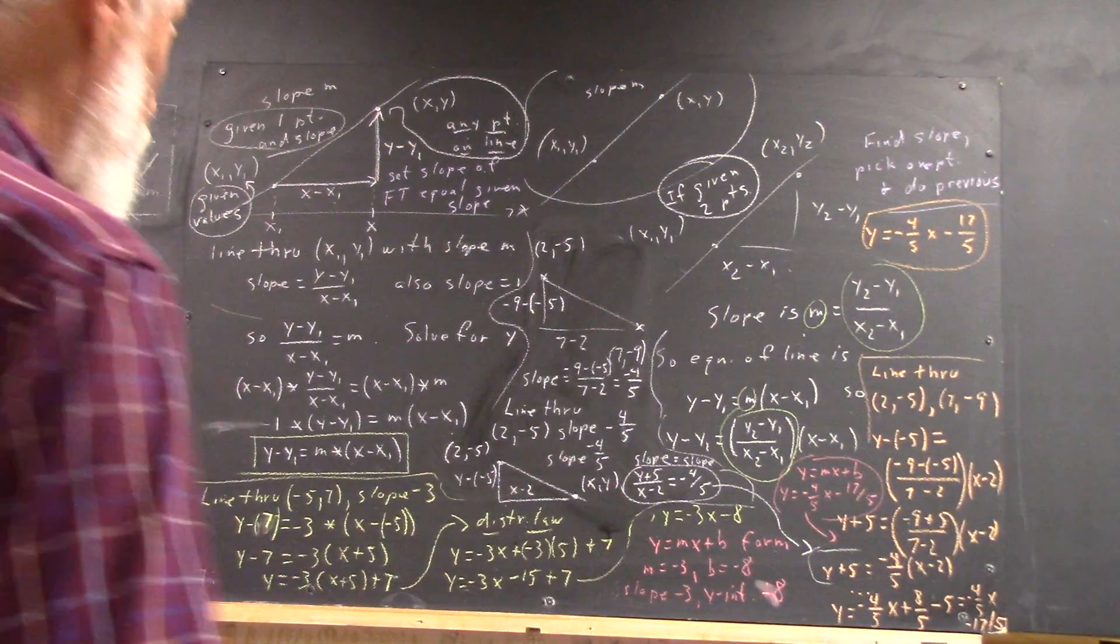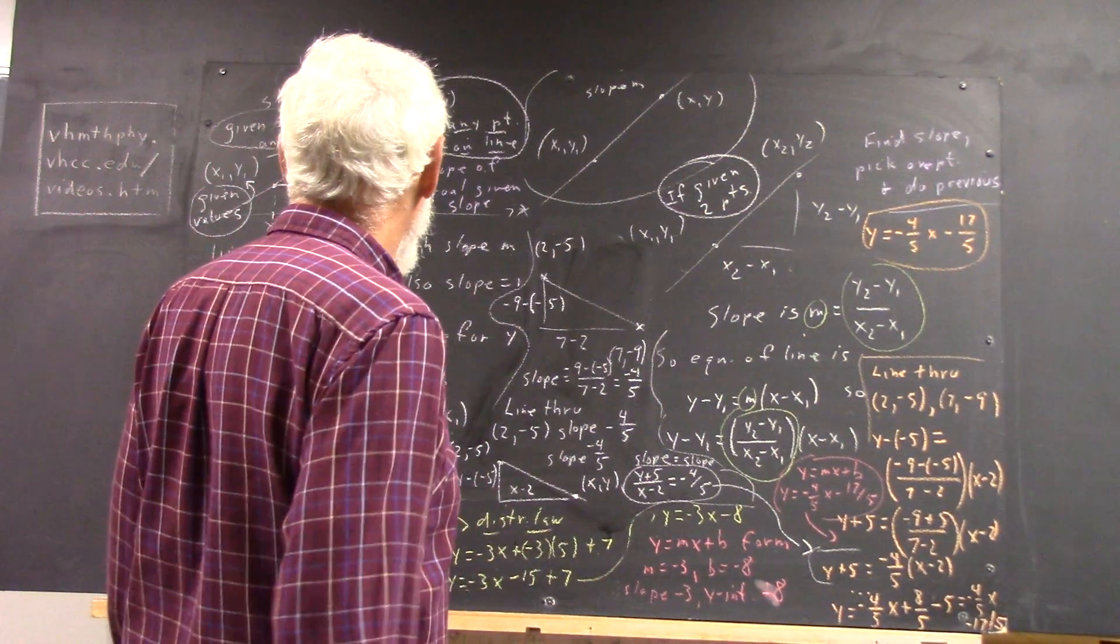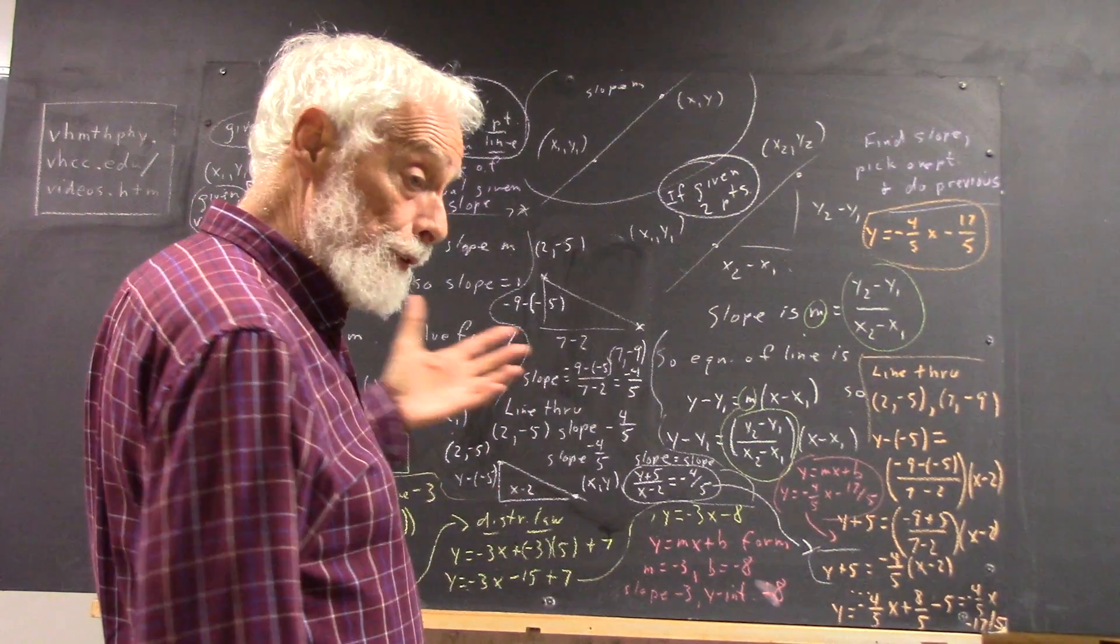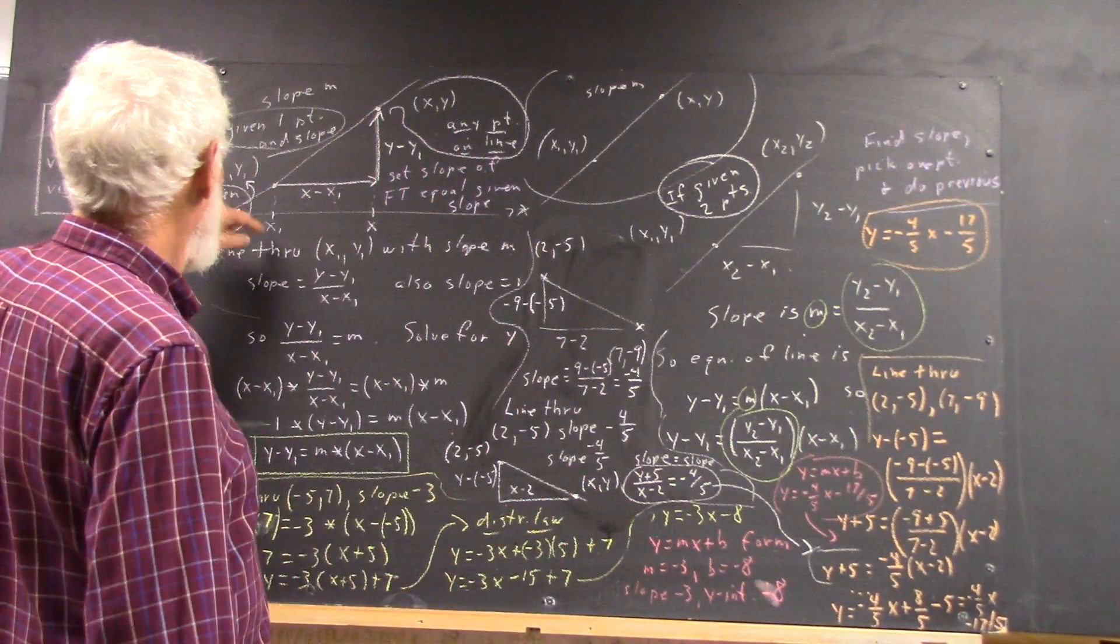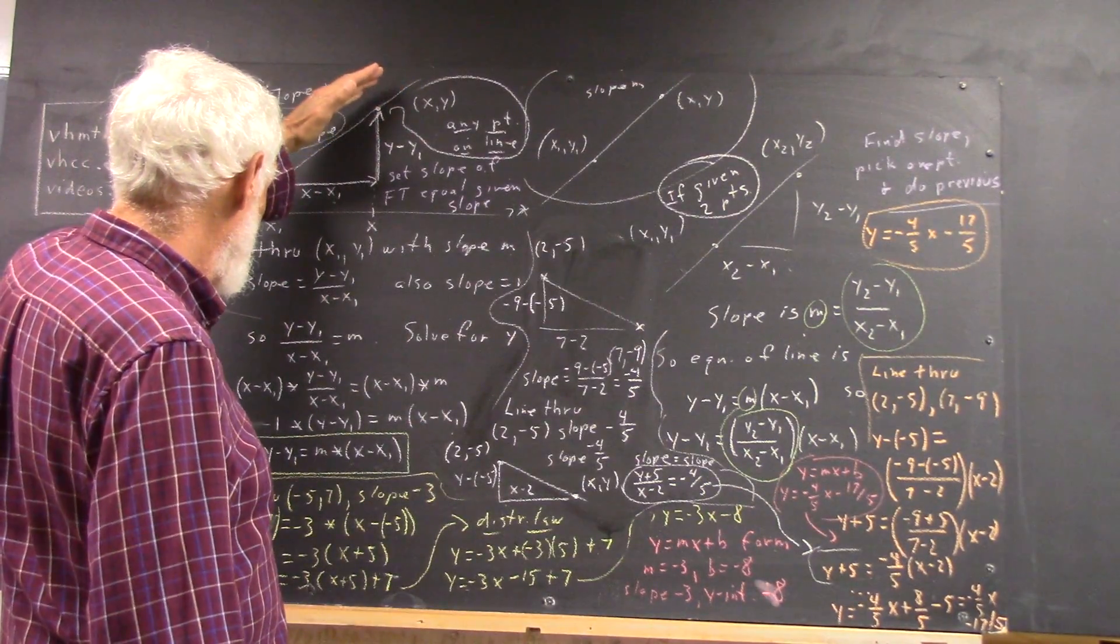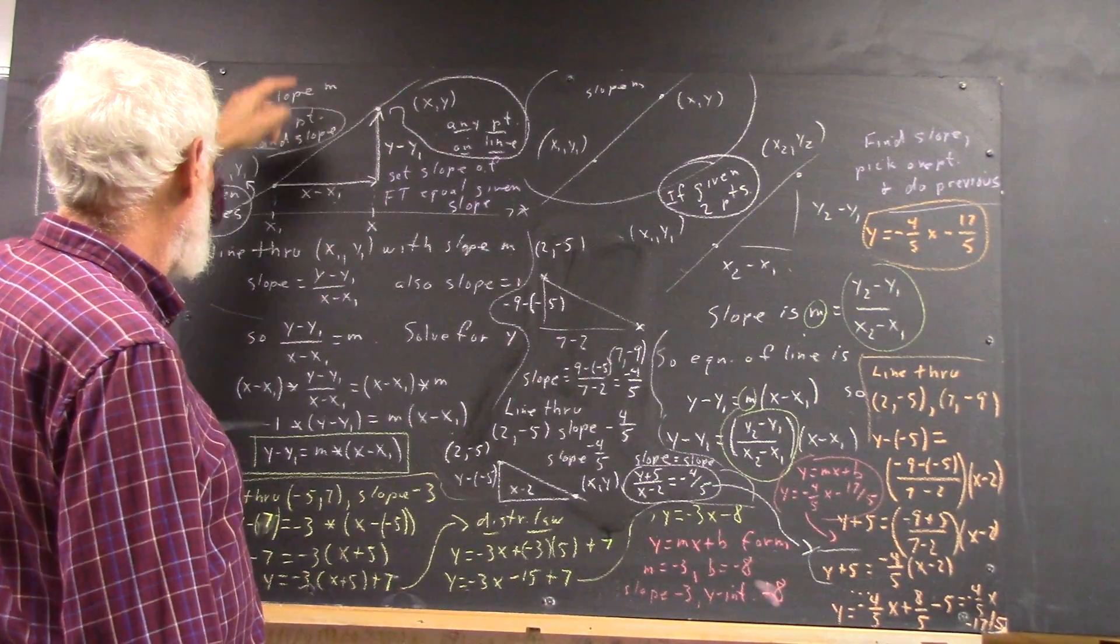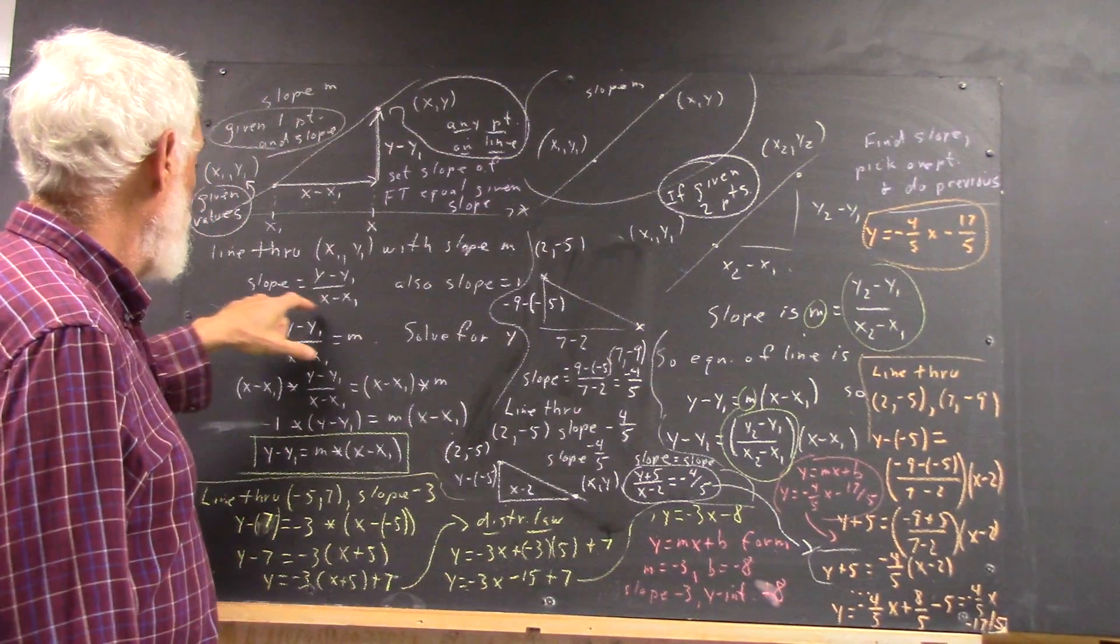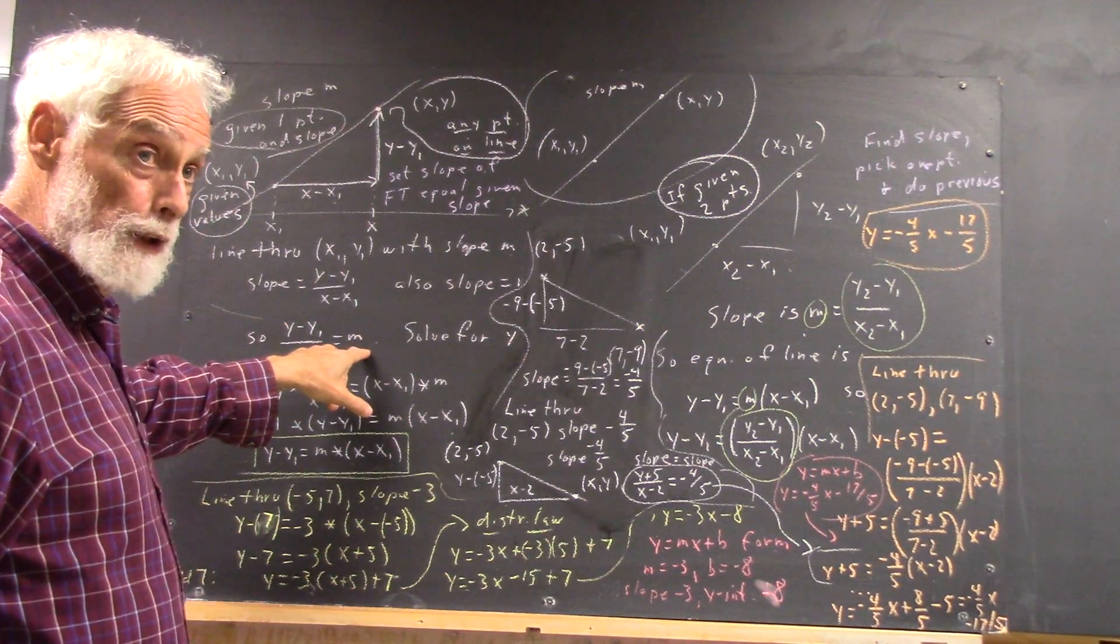Once more, just to beat a dead horse, okay? If you can write out the process of going from a point and a slope, point x1, y1, slope m, and use the fundamental triangle to see that y minus y1 over x minus x1 equals m,